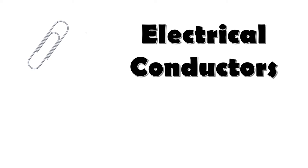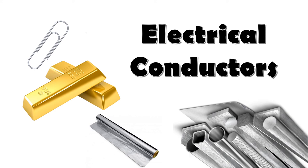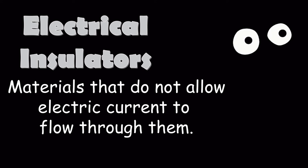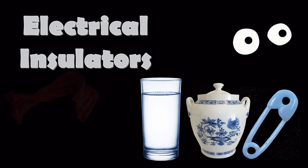Examples of electrical conductors are steel paper clip, gold, aluminum, and iron. Many other metals also conduct electricity, so wires are usually made of metals. On the other hand, electrical insulators are materials that do not allow electric current to flow through them. Examples are plastic safety pin, porcelain, glass, cloth, and wood.